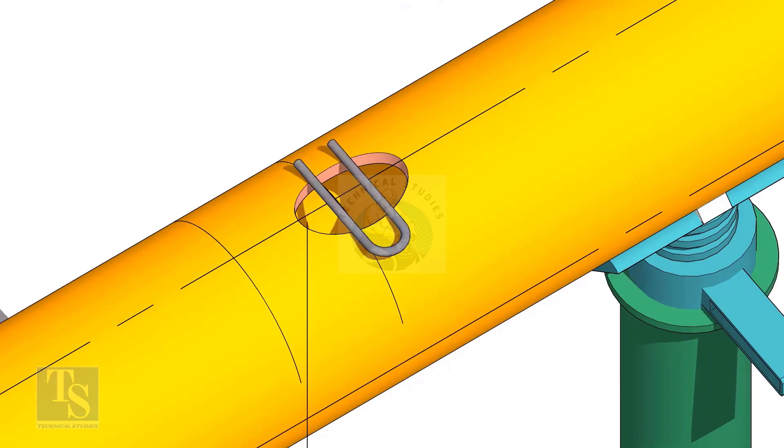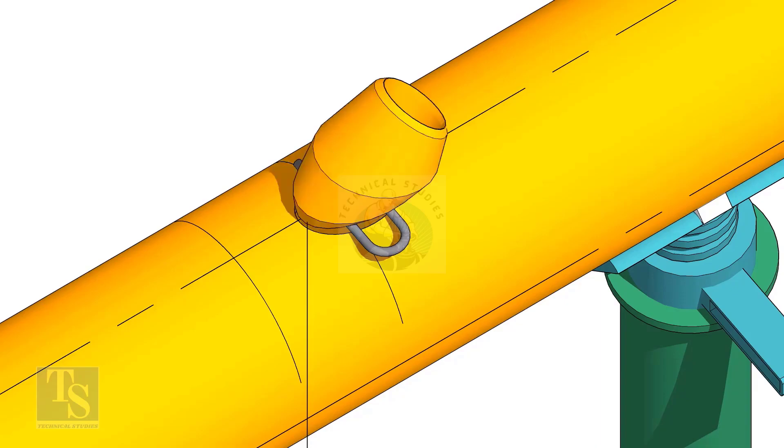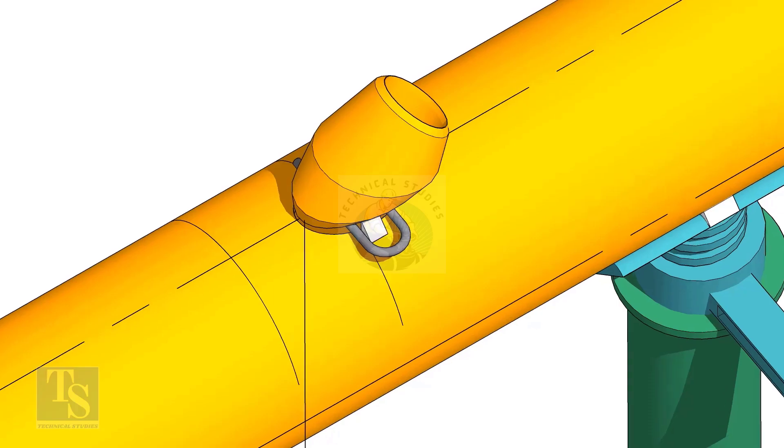Cut and clean the opening on the header. Put the laterolette on the center of the hole. Tack weld on one side.